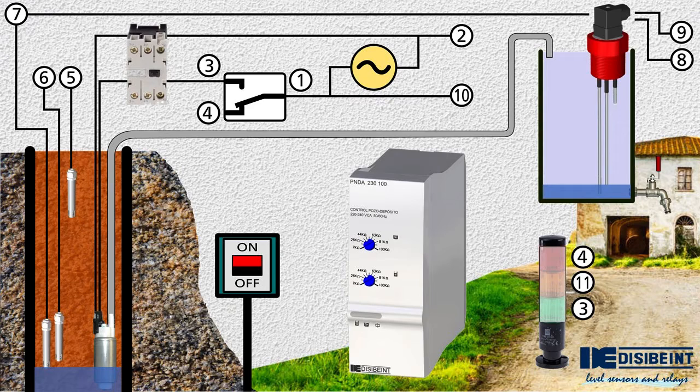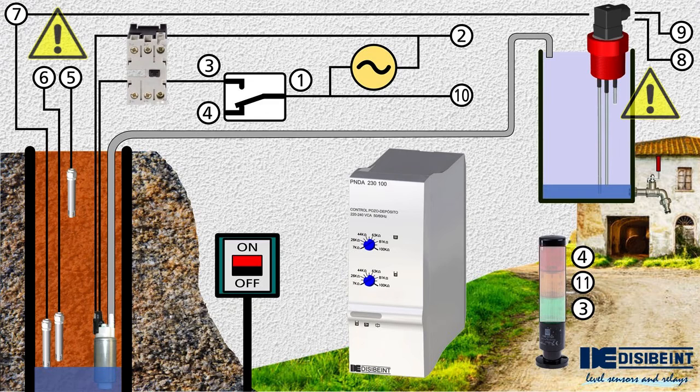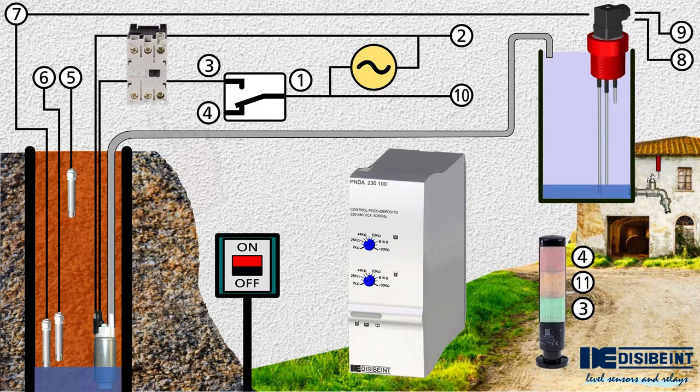It is essential to ensure that the connection to each of the probes is correct. Alternating the maximum and minimum electrodes, for example, causes unexpected effects in which it is customary to believe that the PNDA relay is failing. Identify each cable conveniently and make sure they reach the correct terminal.